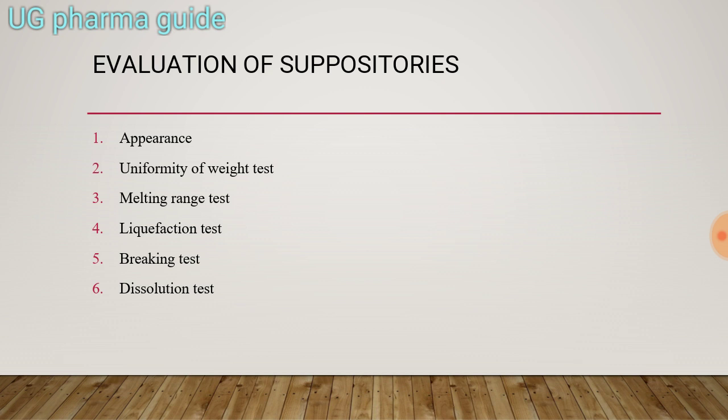When suppositories are prepared, there are several quality check-ups, because we cannot supply suppositories directly to the market. First, we will conduct some quality tests, and then we will send them to the market. In total, there are 6 ways we will test them.